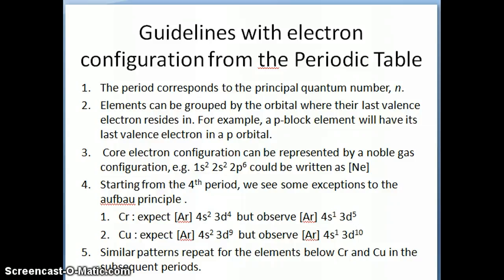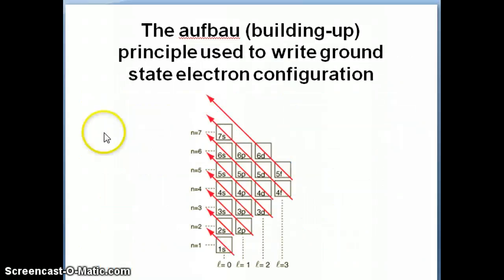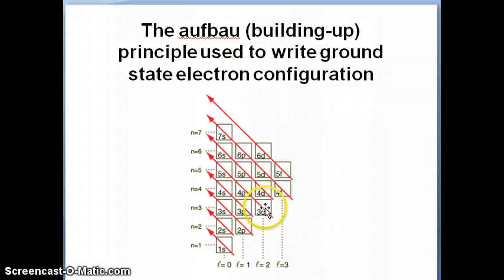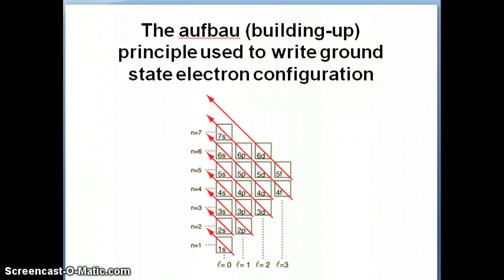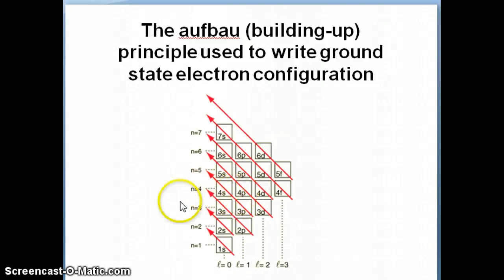When we go through the Aufbau principle, you notice that we go to the 4s orbital first before the 3d orbitals. As it turns out, the 4s orbital is actually more stable than the 3d orbital because of the orbital penetration factor. By the time you get to the 4s and 3d orbitals, their energy levels are so close together that a little bit of stability provided by orbital penetration is enough to bring the 4s to be more stable than the 3d.